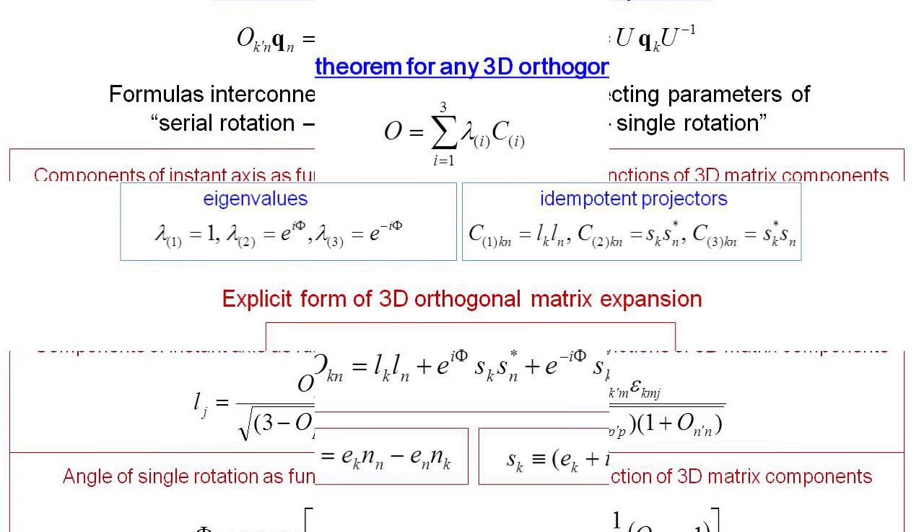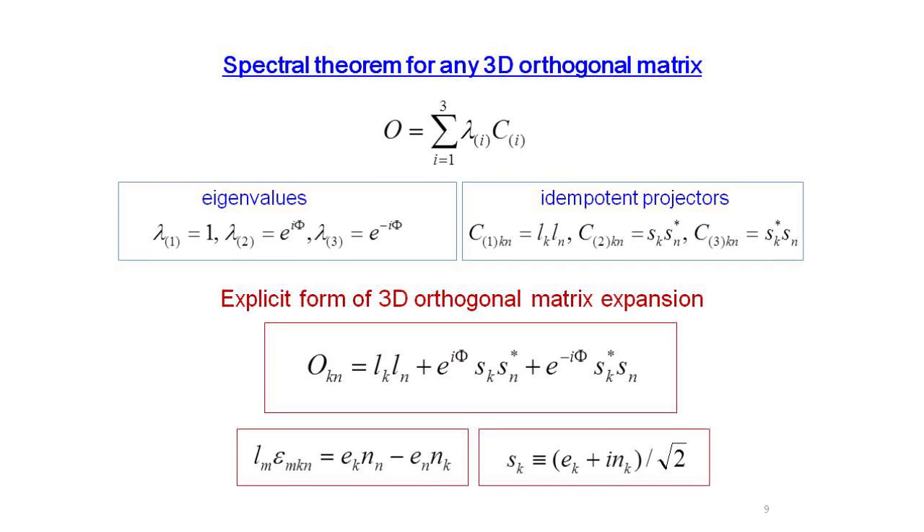We thoroughly investigate the structure of matrix multiplication of both approaches and deduce formulas interconnecting values of the assigned three angles of orthogonal serial rotation with values of the parameters of equivalent single rotation, namely components of the instant axis and respective rotational angle.